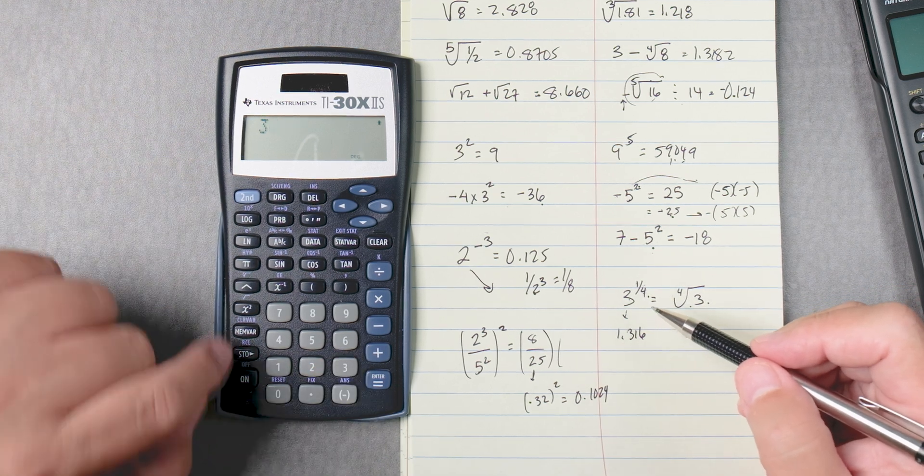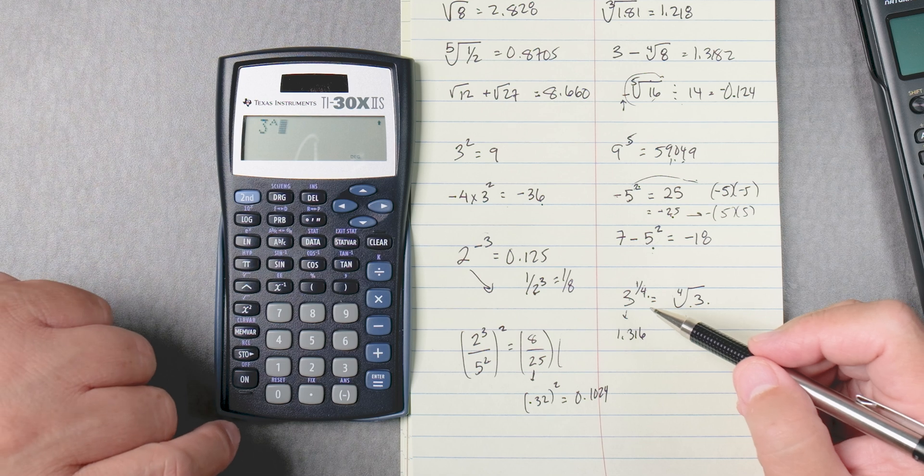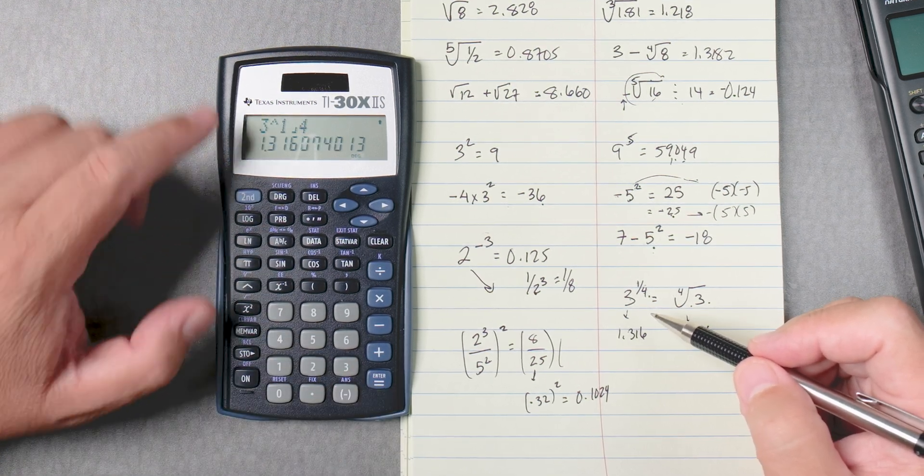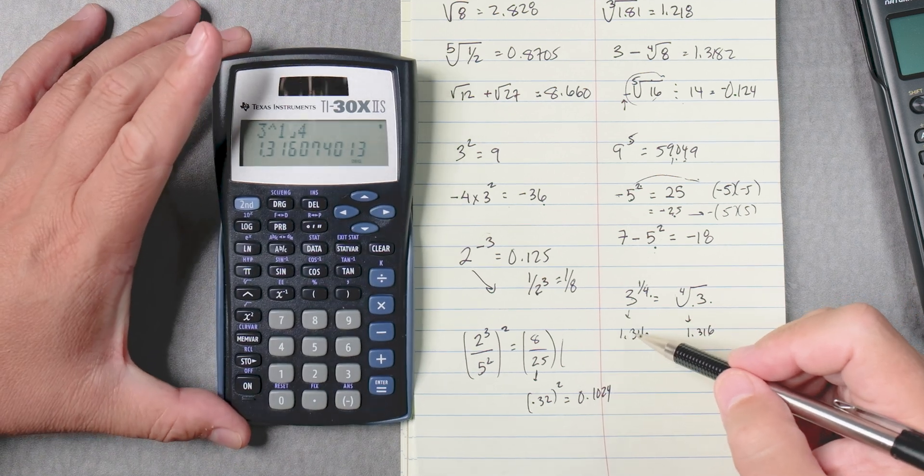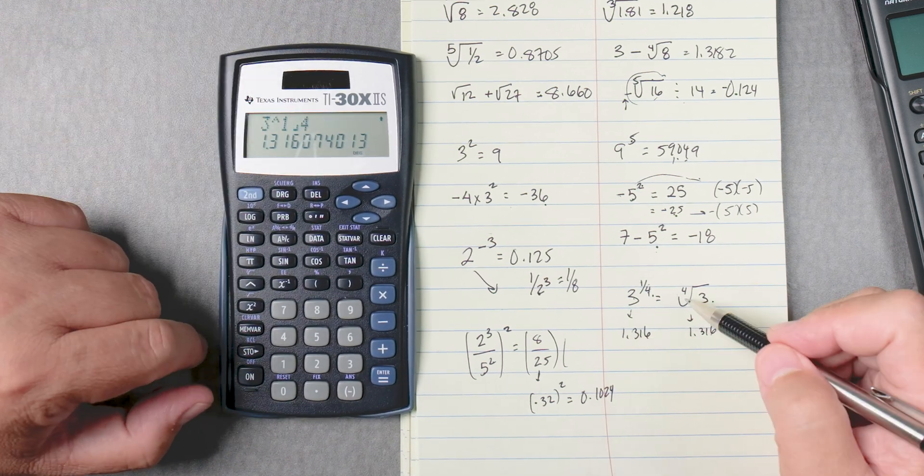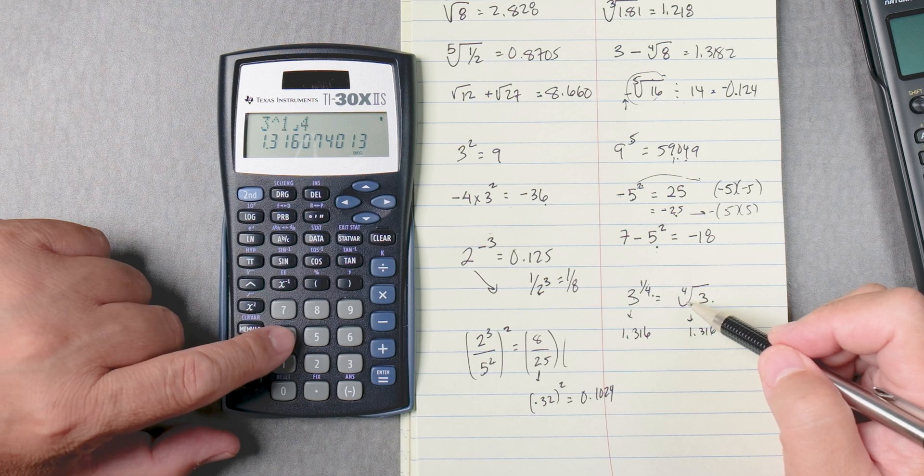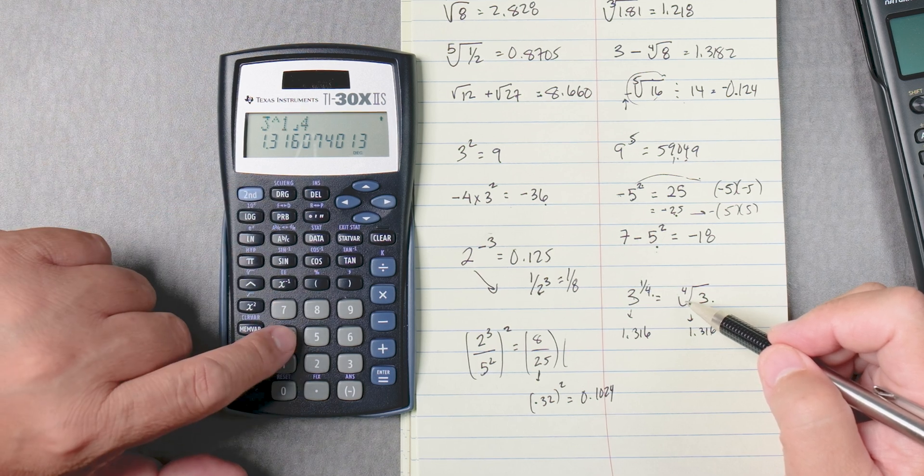So that's 3, carat, right? 1, ABC, 4. Enter, and you get 1.316.